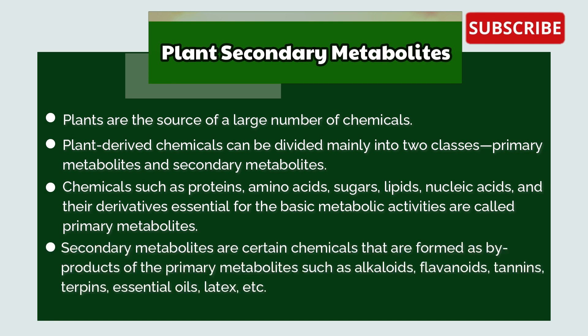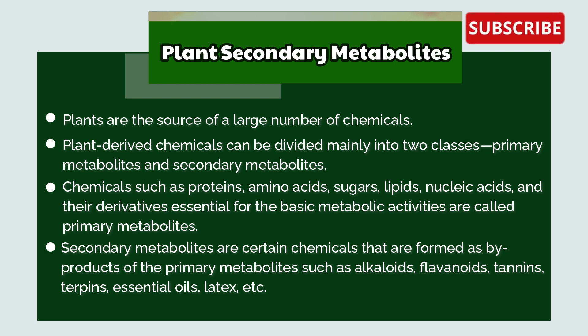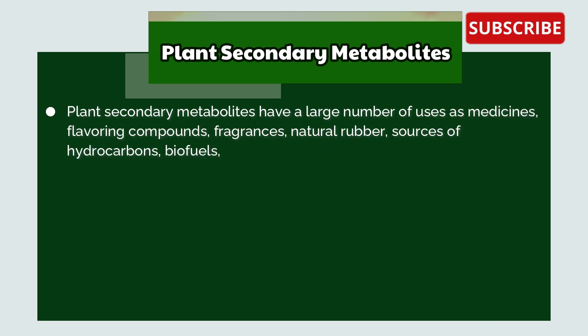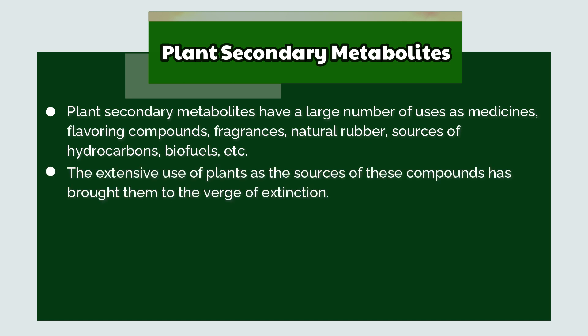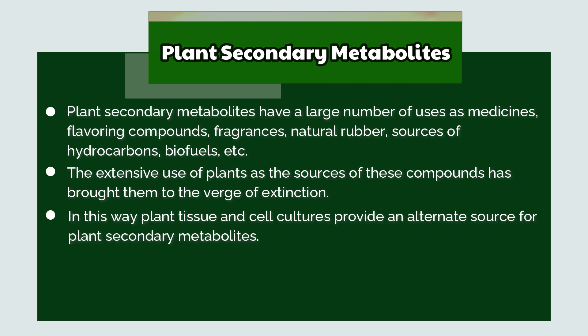Secondary metabolites are certain chemicals formed as by-products of primary metabolic processes, such as alkaloids, flavonoids, tannins, terpenes, essential oils, latex, etc. Plants' secondary metabolites have a large number of uses as medicines, flavouring compounds, fragrances, natural rubber, sources of hydrocarbon, biofuels, etc. The extensive use of plants as sources of these compounds has brought some to the verge of extinction. In this way, plant tissue and cell cultures provide an alternative source for plant secondary metabolites.